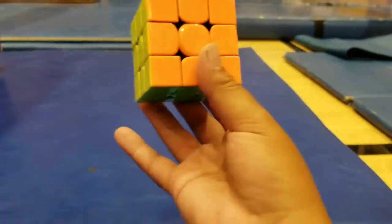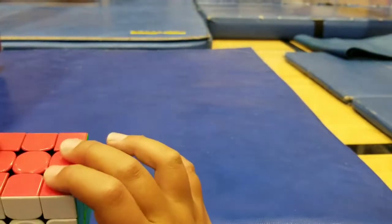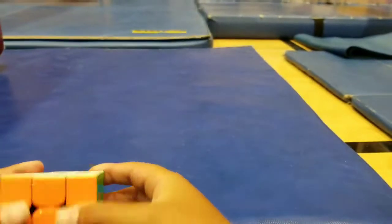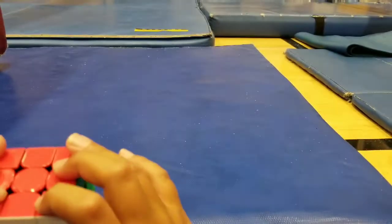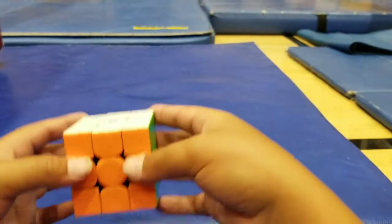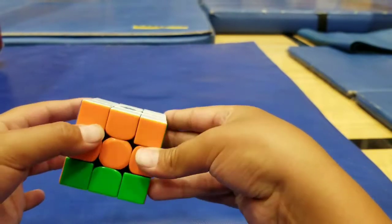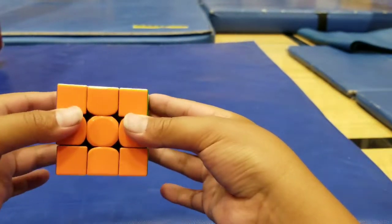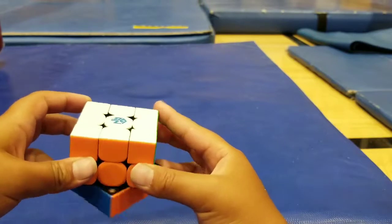The next one is D and D prime. So again you want to hold your fingers right here. Now your ring fingers are right on the bottom and when you use your ring fingers this is D prime. Use your ring finger and push that. This is D, use your other ring finger, push it this way.